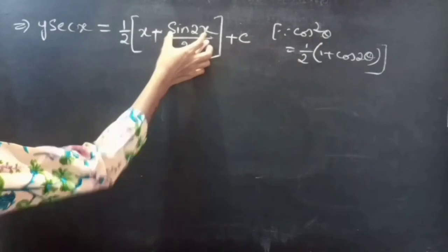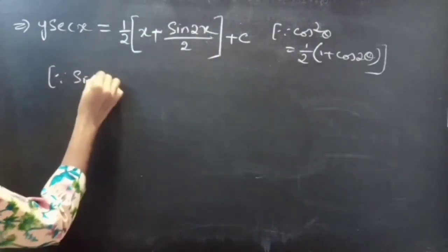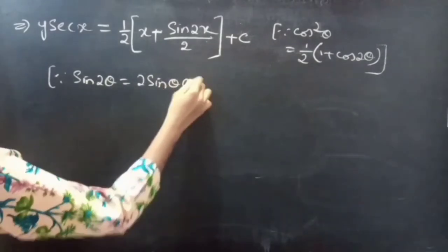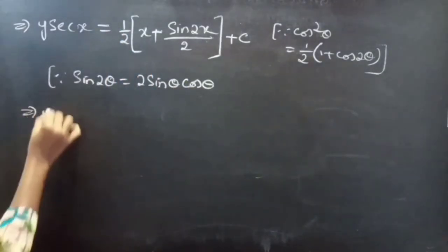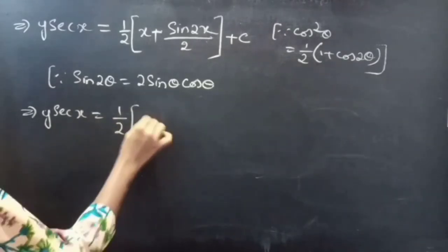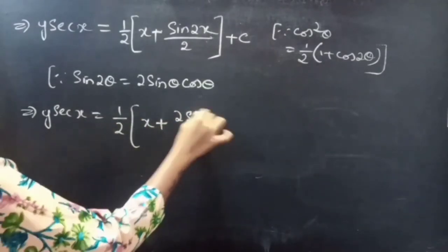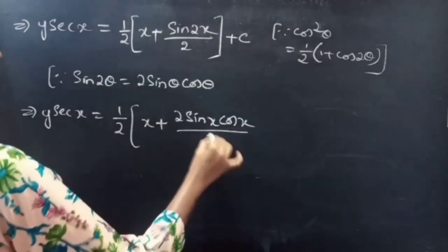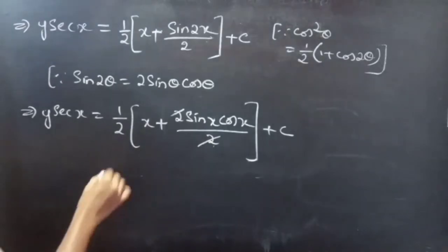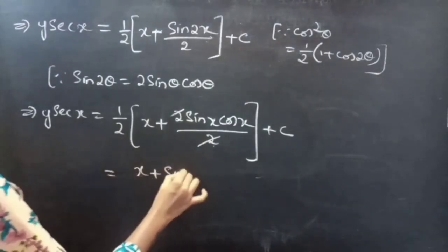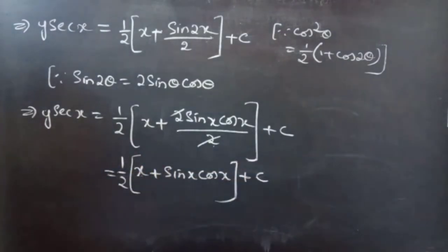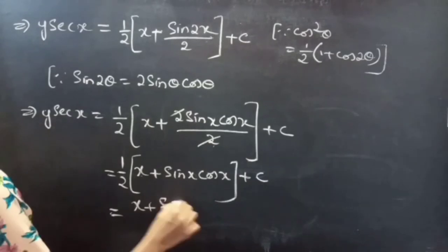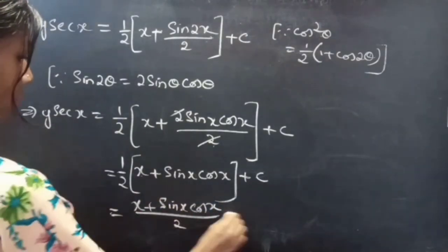We have sin 2x. Since sin 2θ equals 2·sin θ·cos θ, we replace sin 2x by 2·sin x·cos x. This gives y·sec x equals 1/2 times (x + 2·sin x·cos x / 2) plus C, which simplifies to x/2 plus sin x·cos x / 2 plus C.